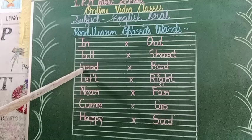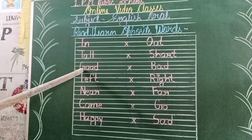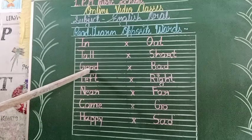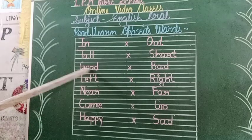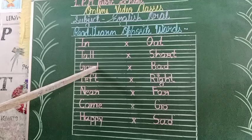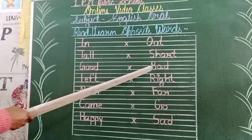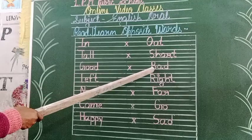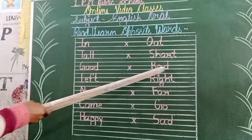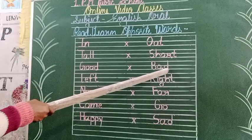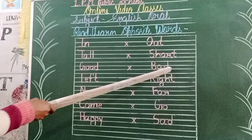Spelling of 'good': G-O-O-D, good. Spelling of 'bad': B-A-D, bad. B-A-D, bad.